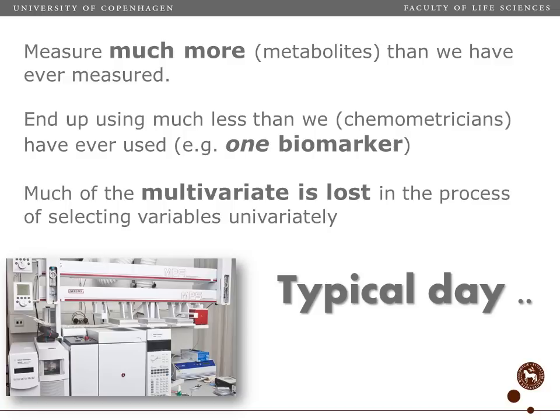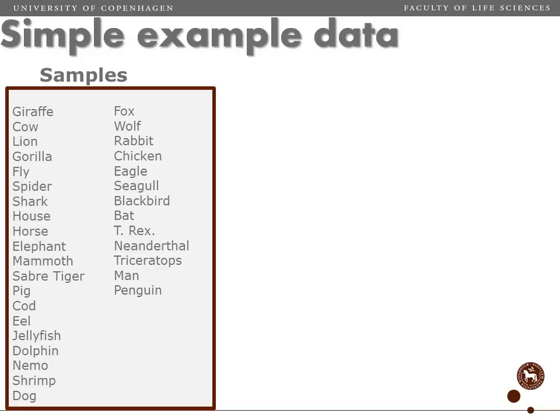A lot of the multivariate advantage is lost because we end up selecting variables quite univariately, and that might be a pity.